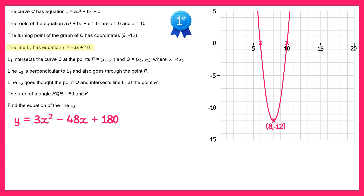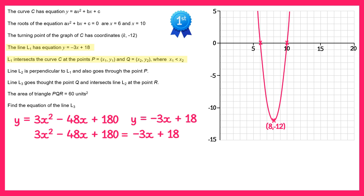Now let's move on to the next part of the question. The line L1 has equation y equals negative 3x plus 18, and L1 intersects the curve at two points — we need to find their coordinates. Since both are in the form y equals, we write 3x squared minus 48x plus 180 equals negative 3x plus 18. Adding 3x and subtracting 18 from both sides gives 3x squared minus 45x plus 162 equals 0.